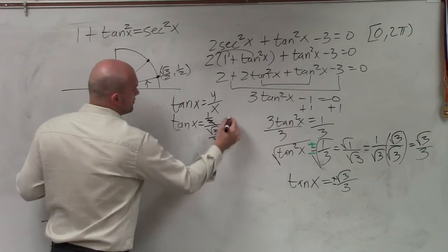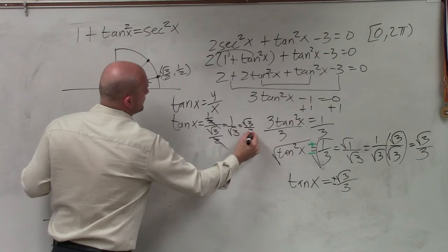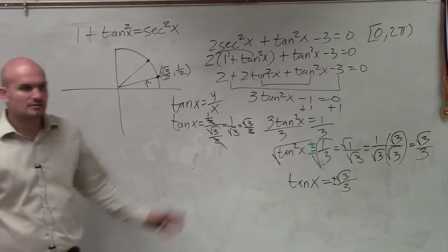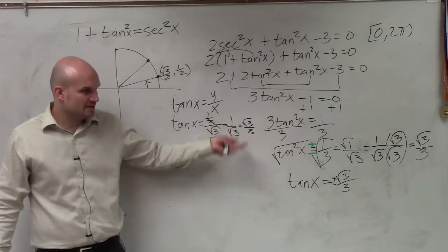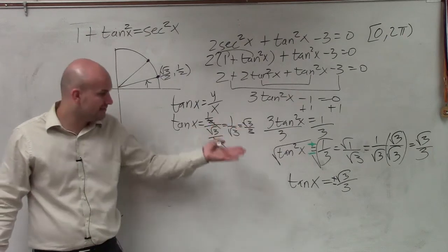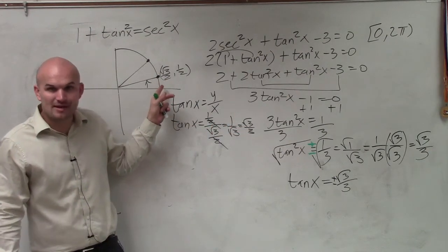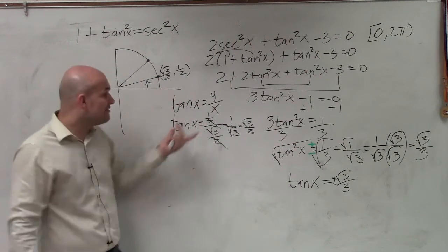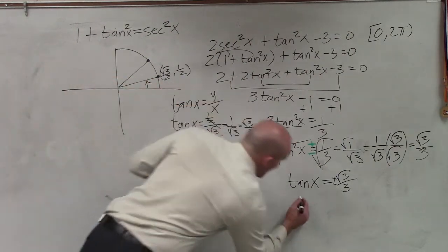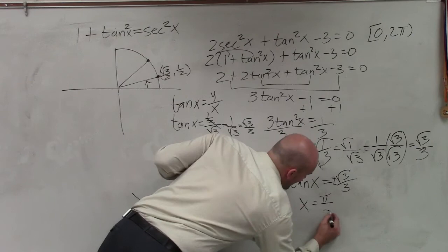tanx = 1/2 divided by √3/2. Those divide out. 1/√3 = √3/3. I just didn't show you the rationalizing the denominator. But you guys can see it's the same thing. So what is then this angle? Does anybody remember? π/6. So I can say x = π/6.